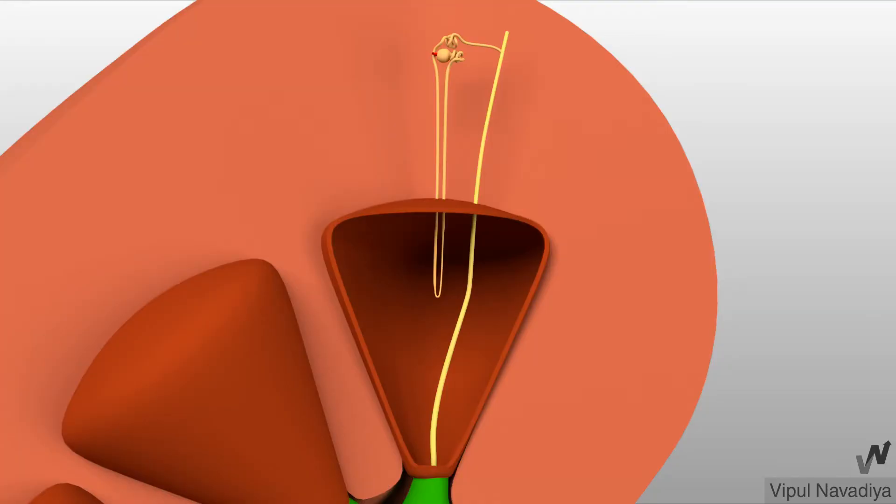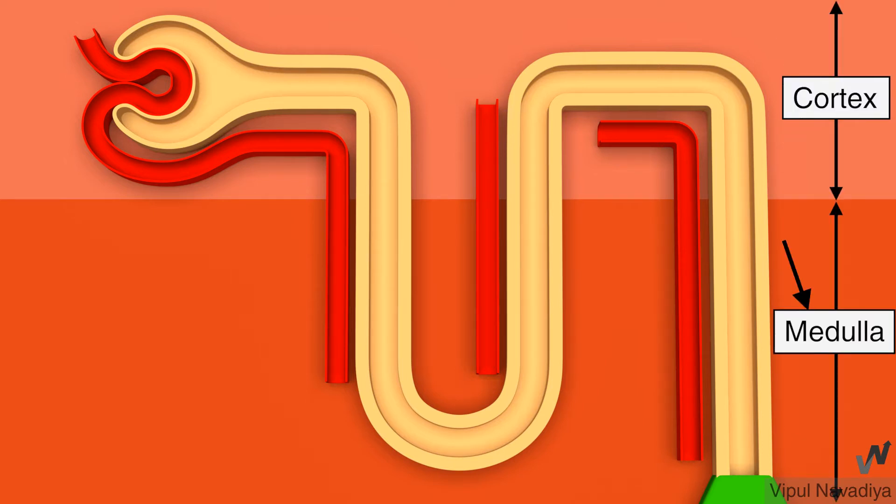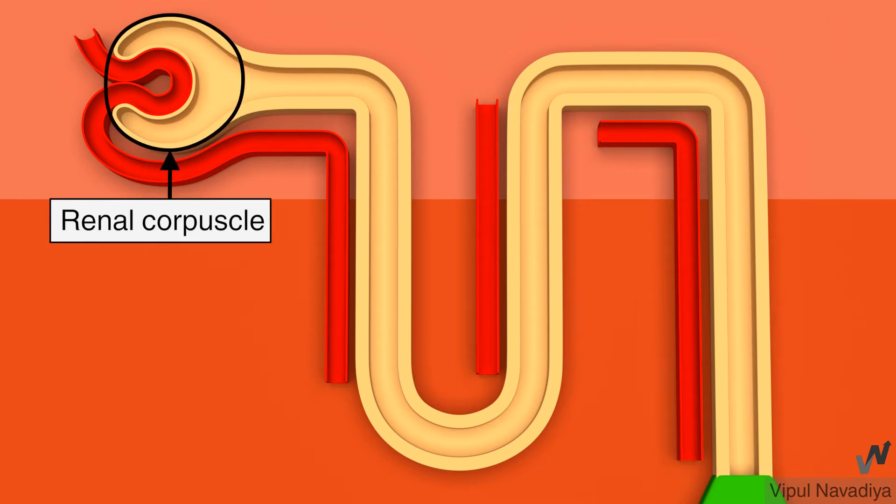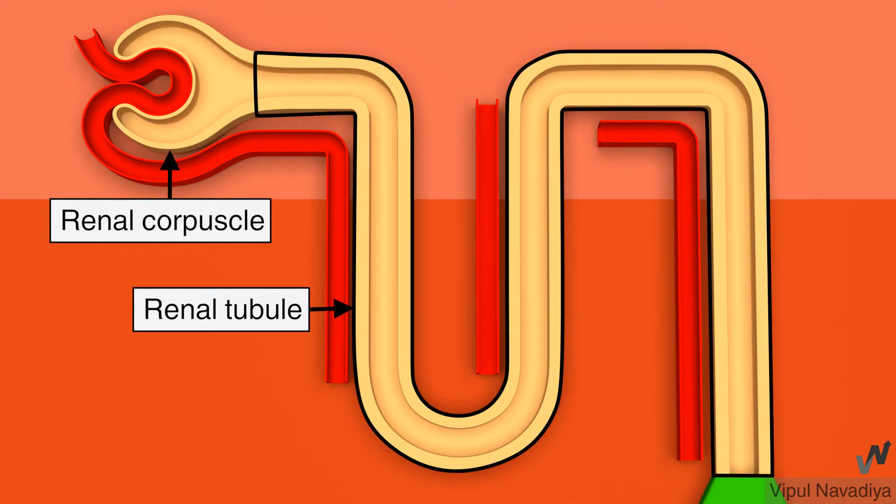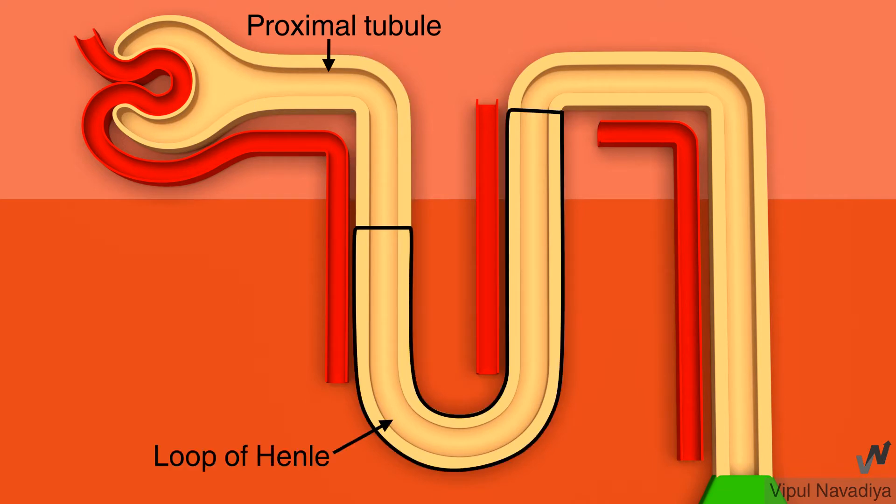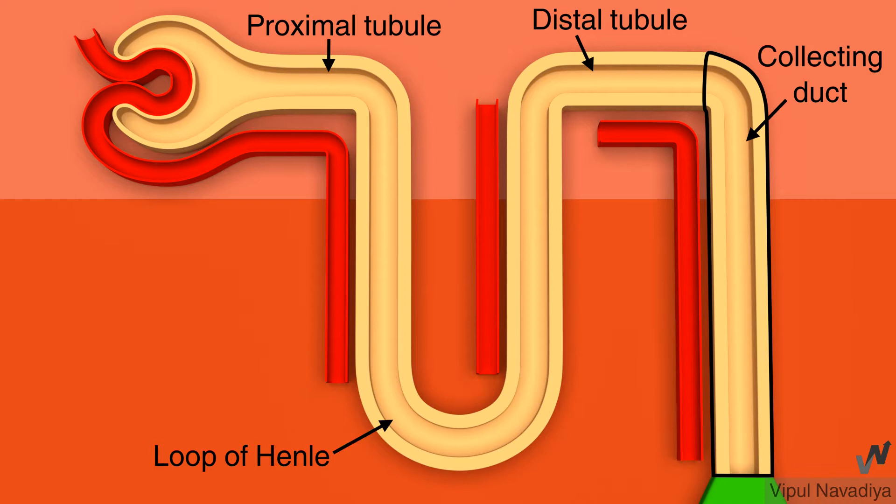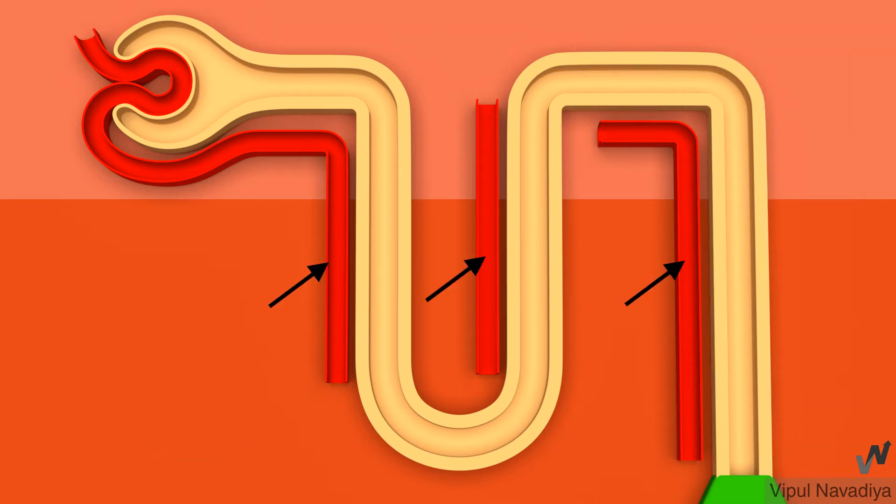First of all, from this video on, we are switching over to this schematic model of nephron for ease of understanding. Here we have cortex and medulla. This is renal corpuscle and this is renal tubule. This portion represents proximal tubule. This is loop of Henle, distal tubule, collecting duct. This is minor calyx and these are some peritubular capillaries.